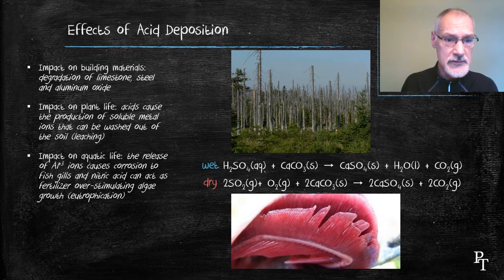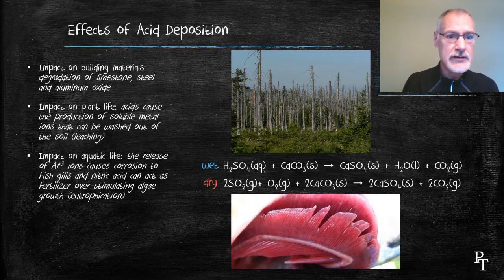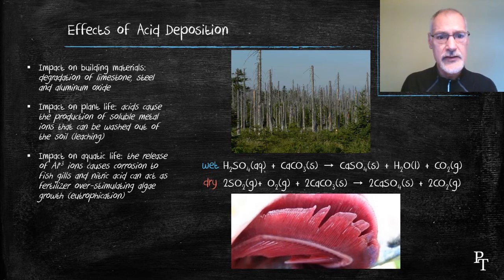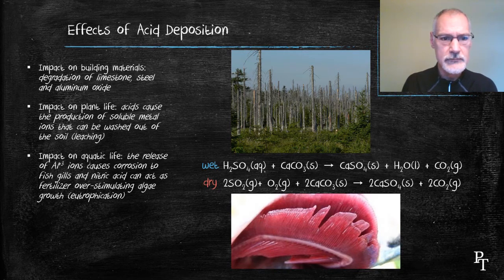There also could be an effect, as seen earlier, on aquatic life. Acidification of rock materials can release aluminum ions that are trapped in that rock. Aluminum ions are particularly corrosive to fish gills, causing die-off of fish. Nitric acid can actually act as a fertilizer and promote the growth of algae in lakes, leading to a condition called eutrophication. Perhaps you've seen it sometimes called an algal bloom.